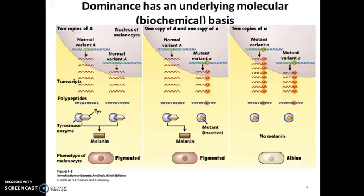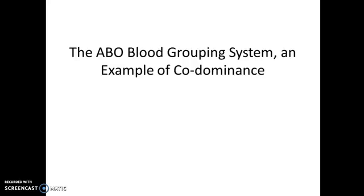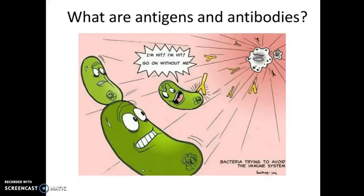That is not always the case, as we shall see. Let's consider the example of the ABO blood grouping system. It's an example of something called codominance.